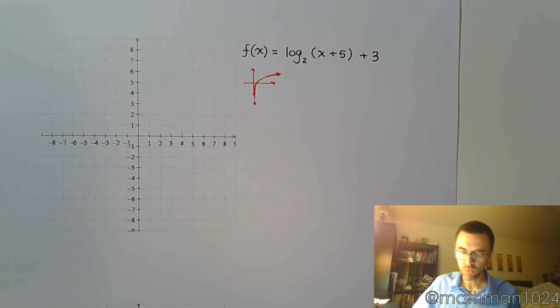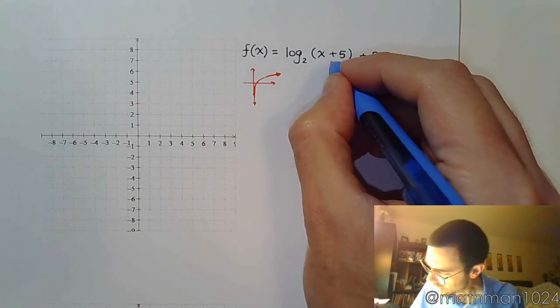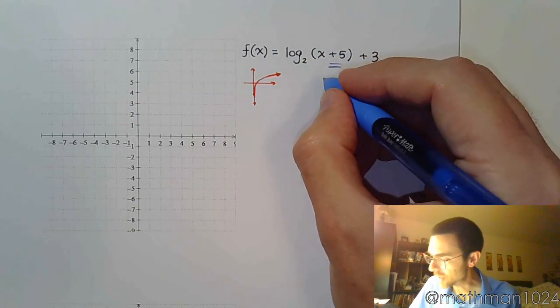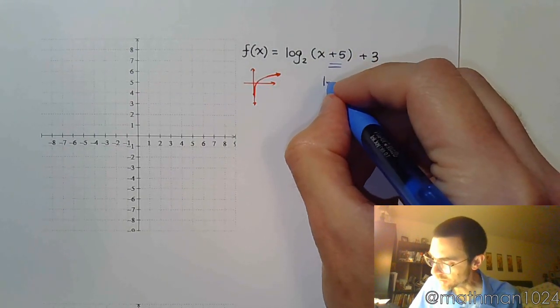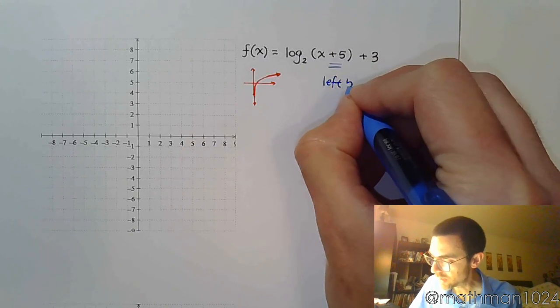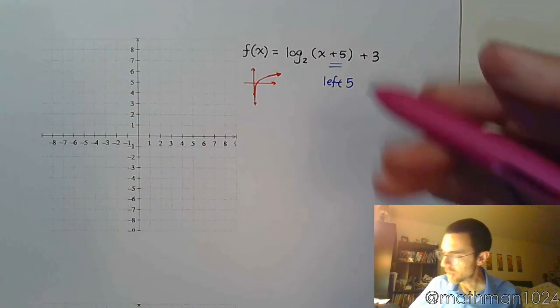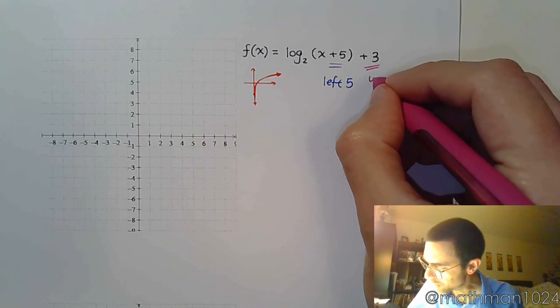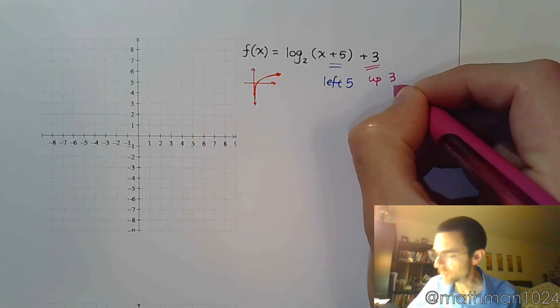So let's think about what is going on here. Inside, I see a plus 5, so that means I need to do the opposite of that horizontally and go to the left 5, just as it has always been. On the outside, I see a plus 3, so that means I go up 3 units.